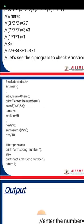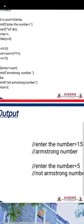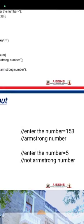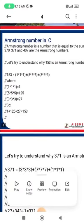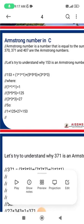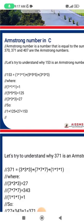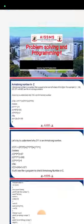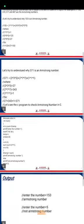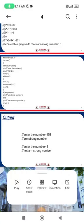For example, if we enter 153, the output will be 'Armstrong number'. We calculate 1×1×1 + 5×5×5 + 3×3×3 = 153, which matches the original, so it is an Armstrong number. If the sum does not match, it is not an Armstrong number. This is the basic example of Armstrong numbers in C. Thank you — we will see the next program.